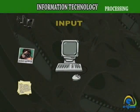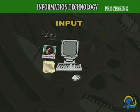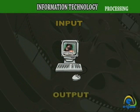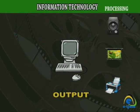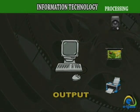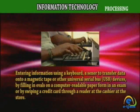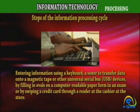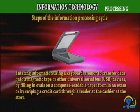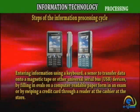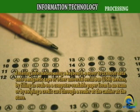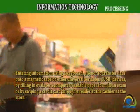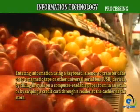Let's examine the cycle closer. To begin the cycle, the original data has to be entered and recorded into the computer in a form that the computer understands. Data can be entered in many ways, such as using a keyboard, a sensor to transfer data onto a magnetic tape, USB devices, filling in ovals on a computer-readable paper form in an exam, or by swiping a credit card through a reader at the cashier in a store.